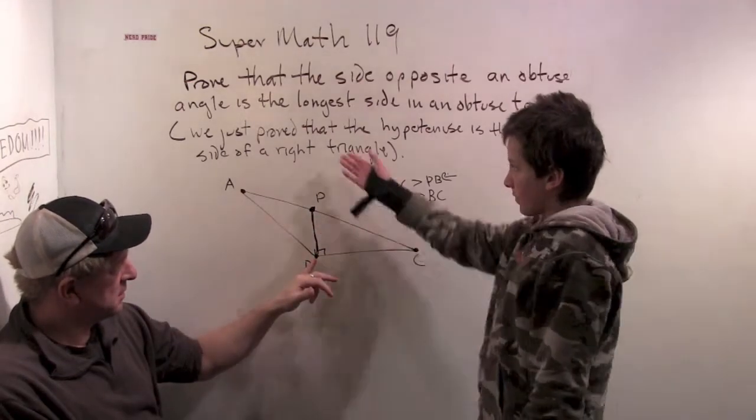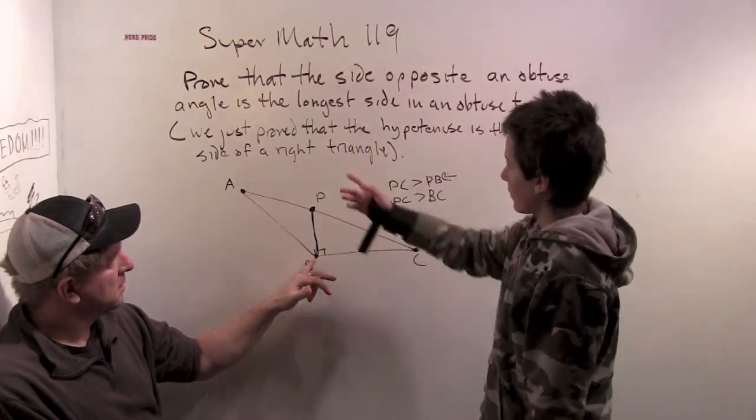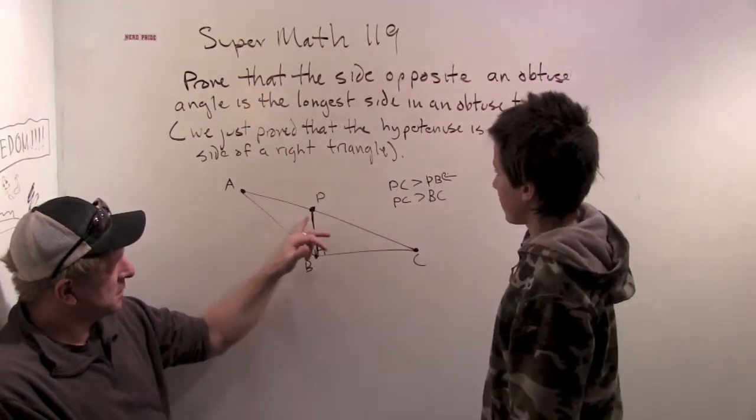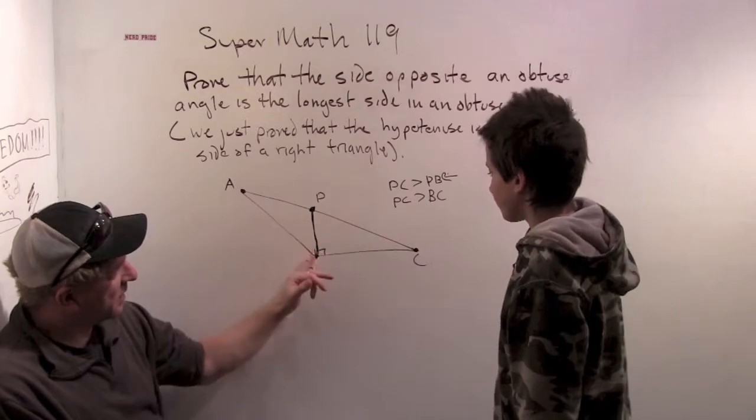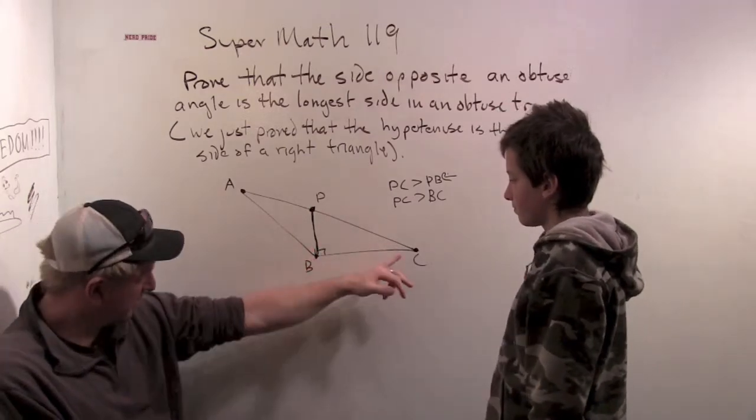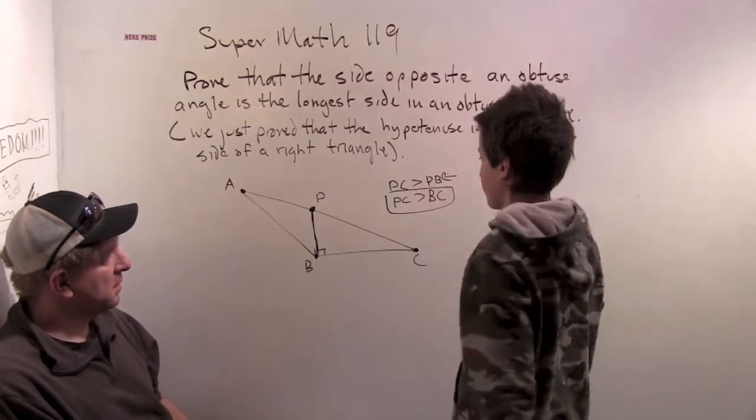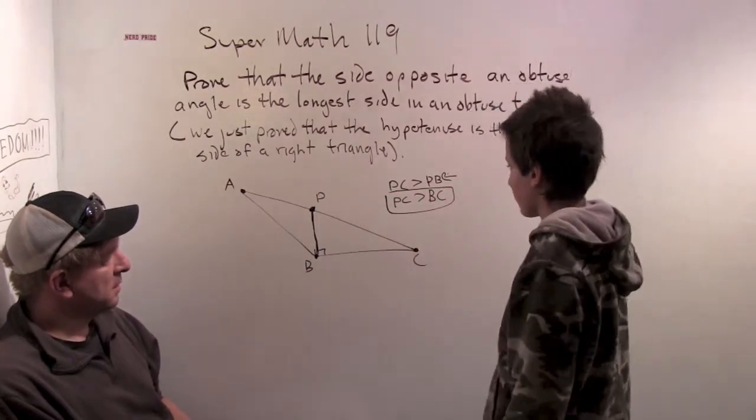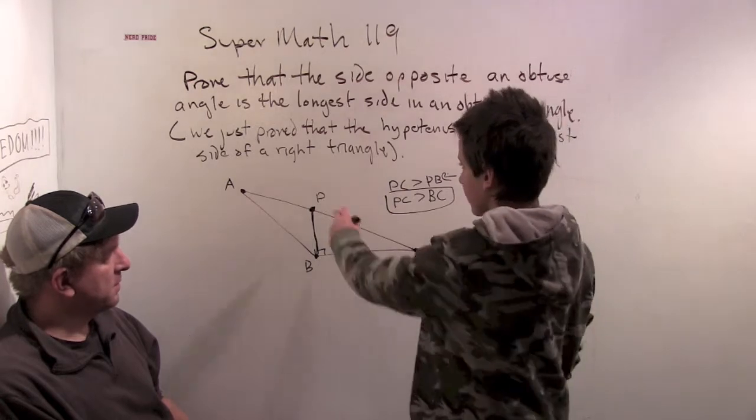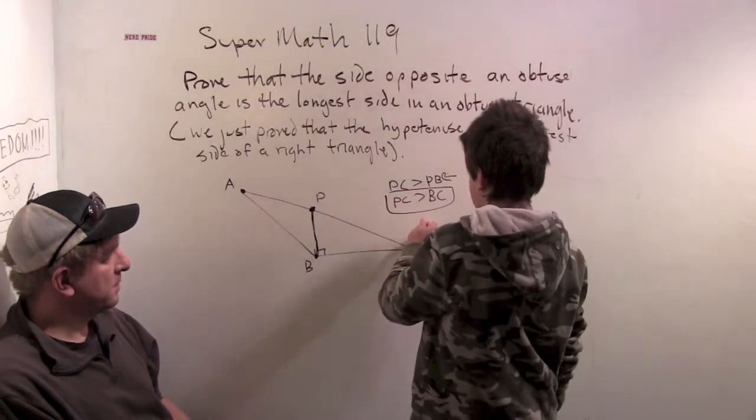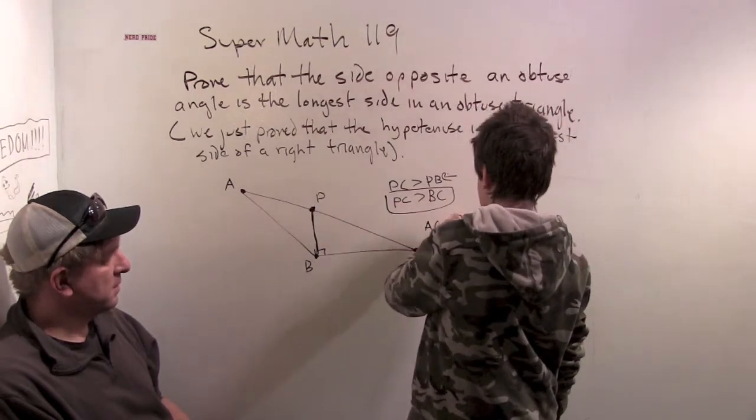The hypotenuse is the longest side of our right triangle. Okay, because PC is the hypotenuse of our right triangle. We also know that PC is longer than BC. Good. So this is the one that actually matters. Alright. So, and we know, it looks like here that AC is greater than PC.